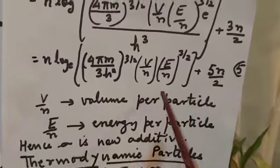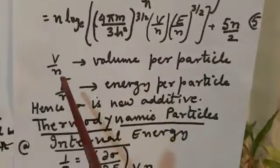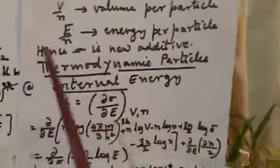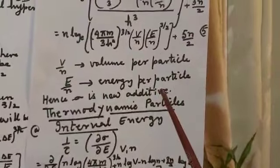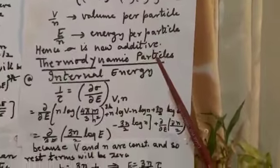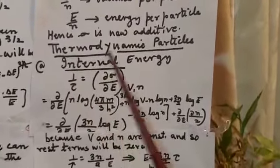Here V/N is the volume per particle, and E/N is the energy per particle. So this sigma is now additive — this entropy is now an additive quantity.